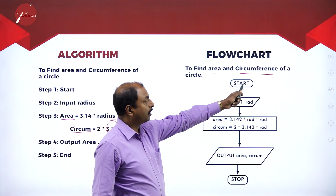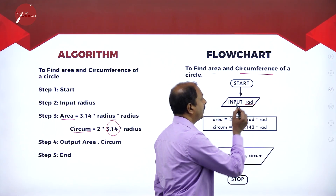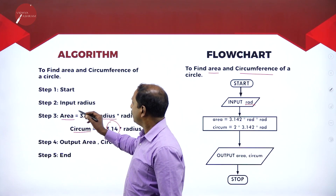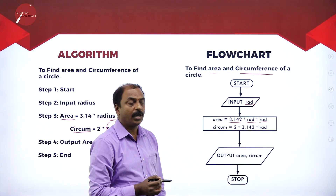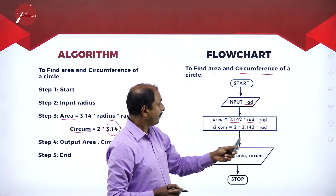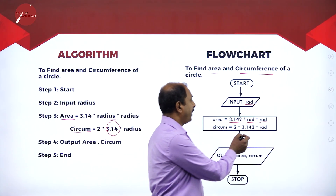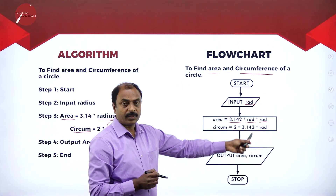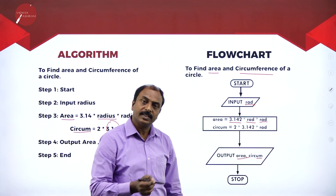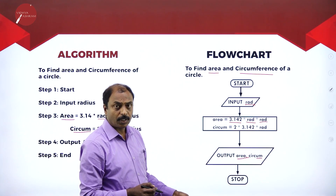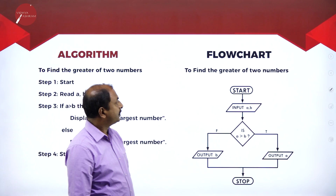Now let us see the flowchart for the same. As usual, the flowchart starts with an oval (start), then input radius (RAD stands for radius) using a parallelogram. Then the processing: area = π × radius × radius, and circumference = 2 × 3.14 × radius. This is the calculation or process step. At the end we print the output — area and circumference of the circle — and stop. This is the flowchart to find area and circumference of a circle.